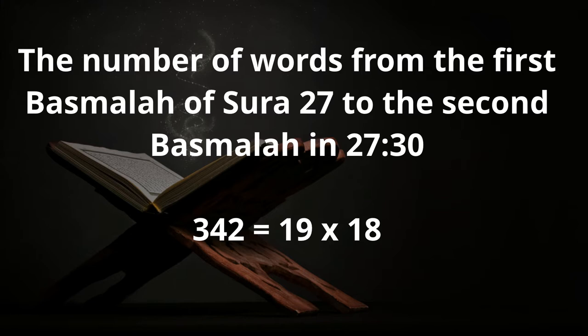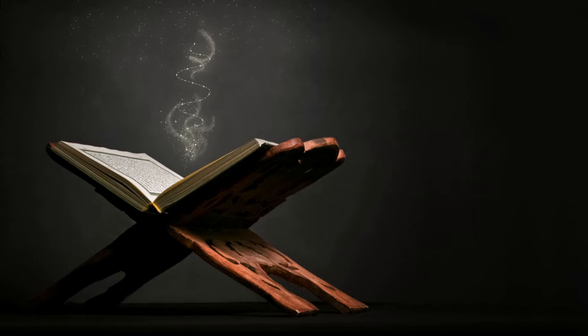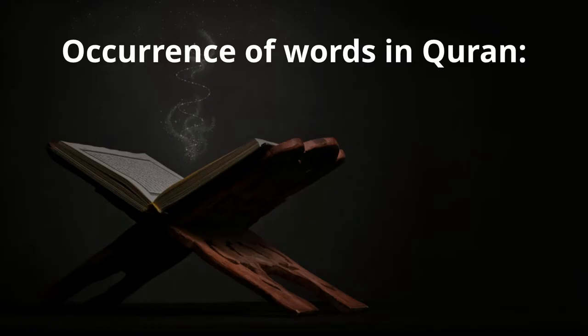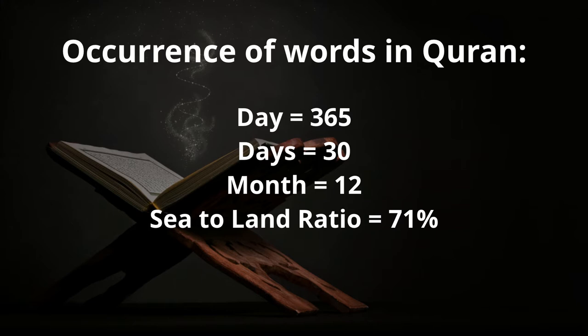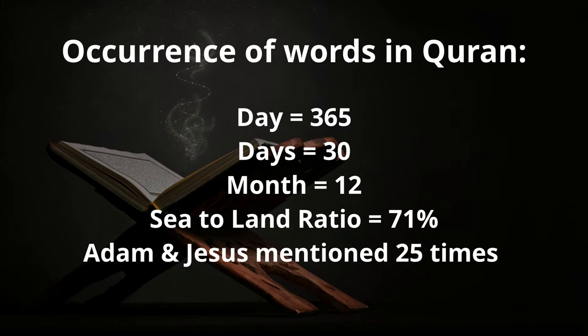This pattern repeats again and again. People knew for years, even prior to the discovery of the mathematical miracle, that certain word occurrences in the Quran appear in interesting numbers. For instance, the word 'day' is mentioned in the Quran 365 times — the number of days in a solar year. The proportion of the words 'land' to 'sea' is 71%, just as it is on planet Earth.